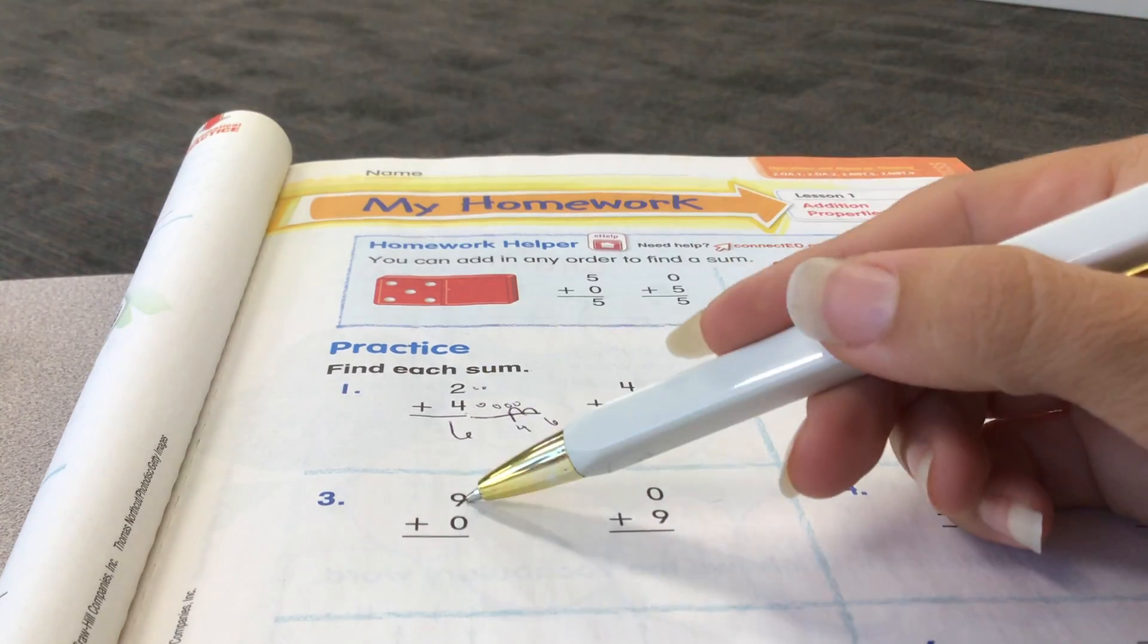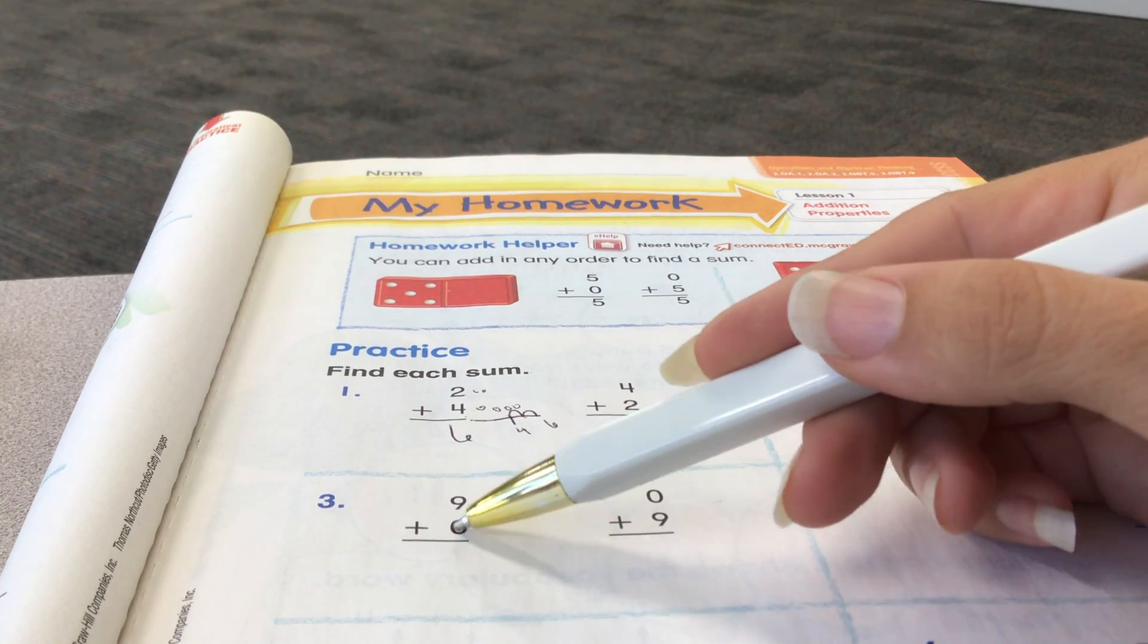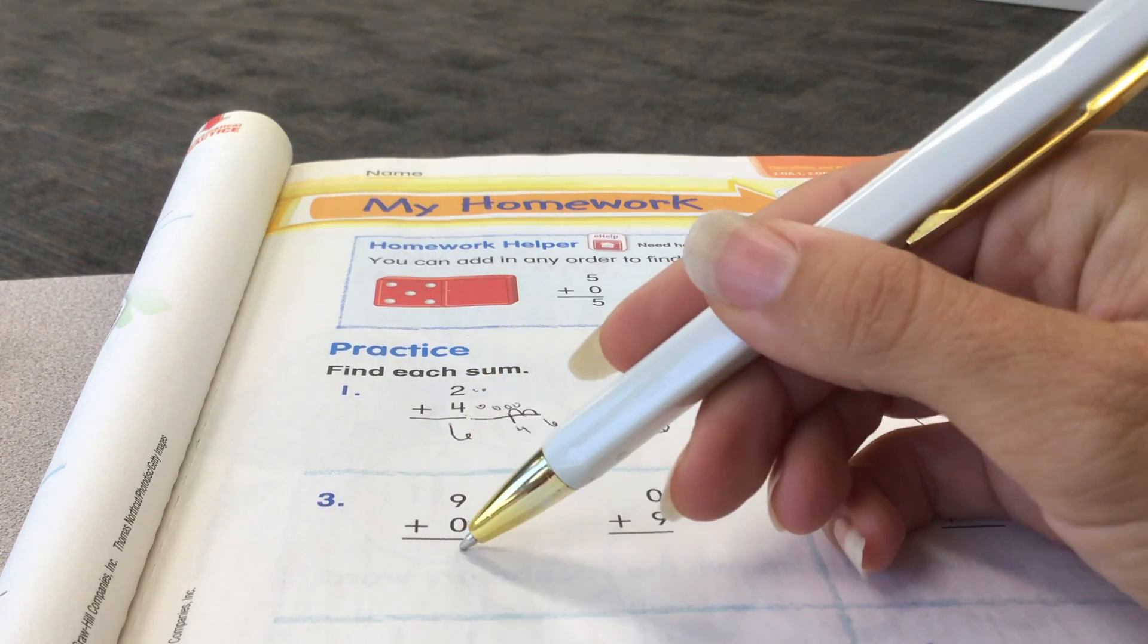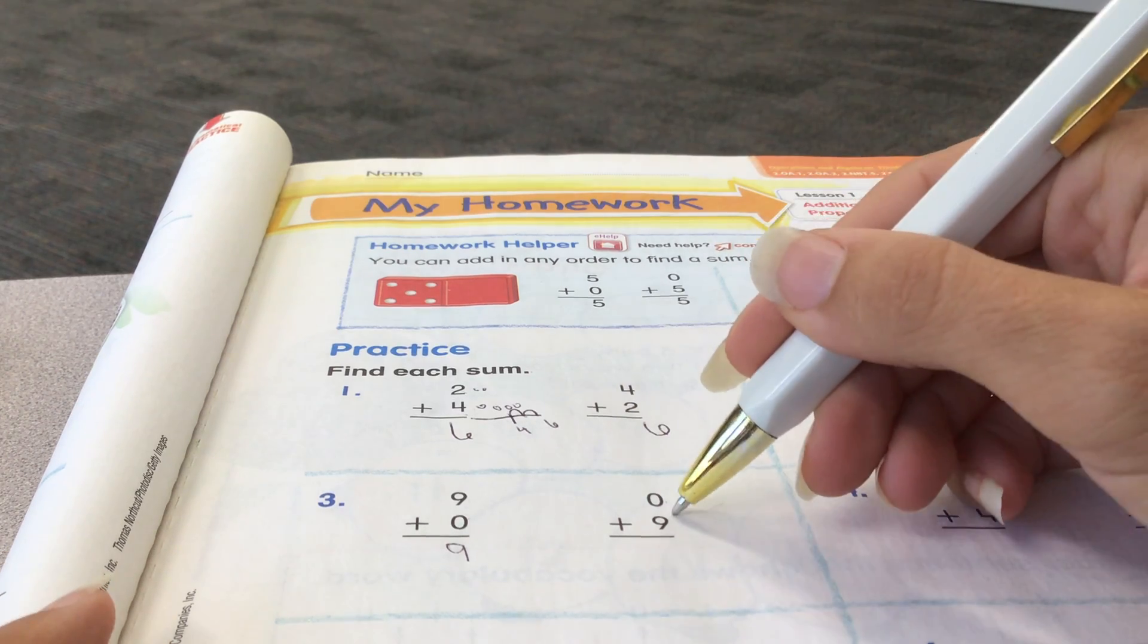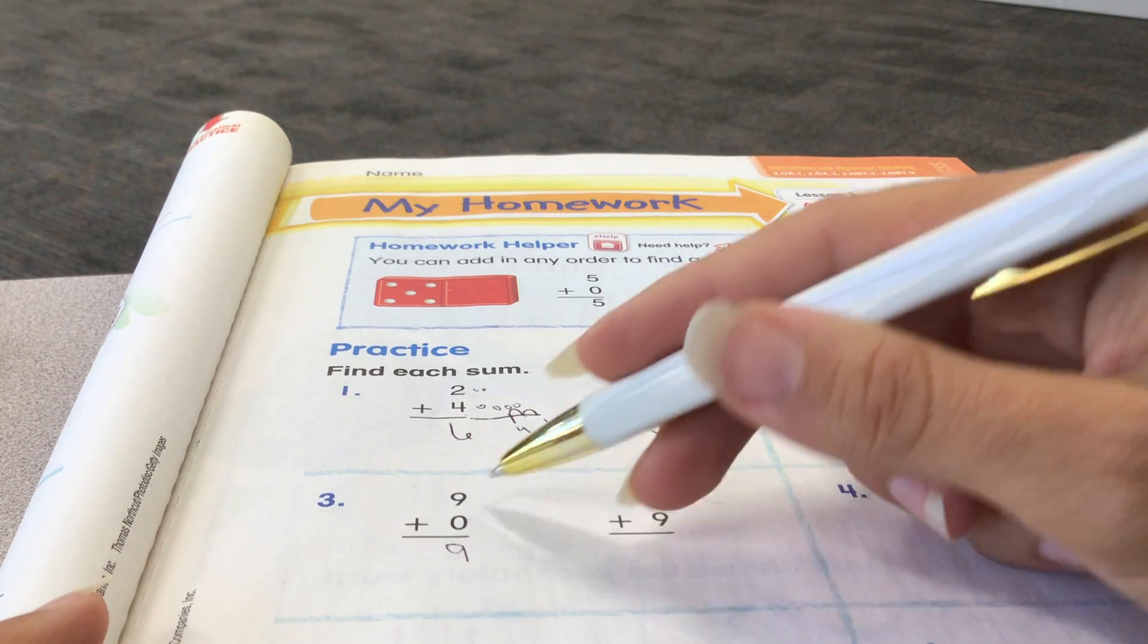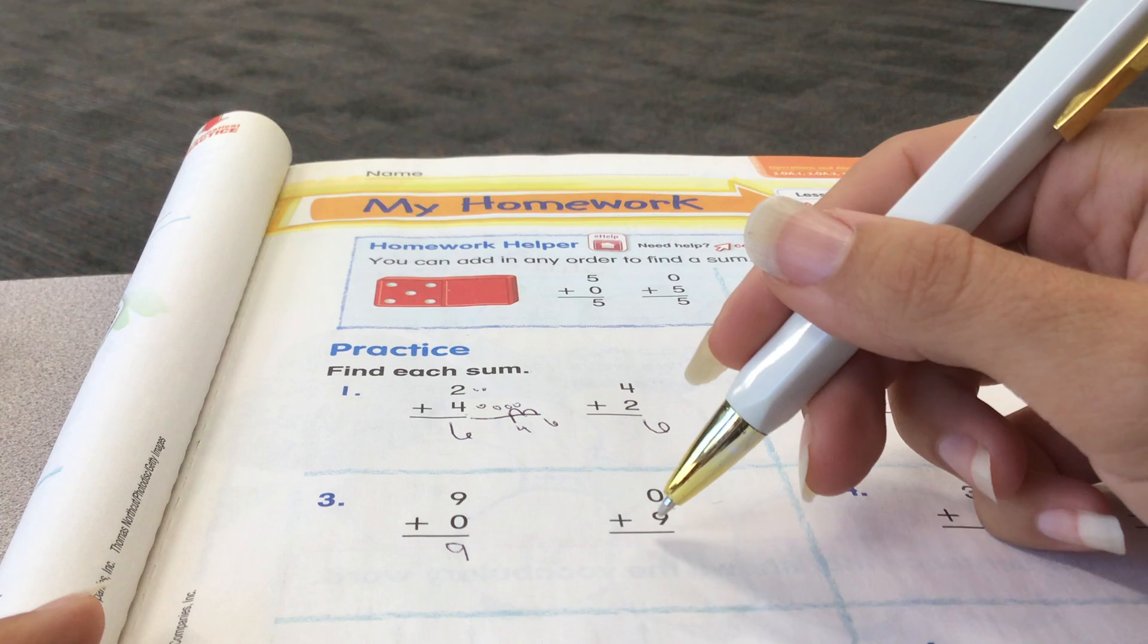Number 3, 9 plus 0. Oh, it's that identity property. 9 will stay the same. That was easy. 0 plus 9, same answer. We just flip that in. We could add in any order.